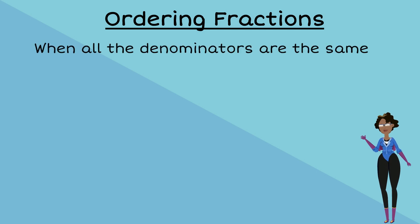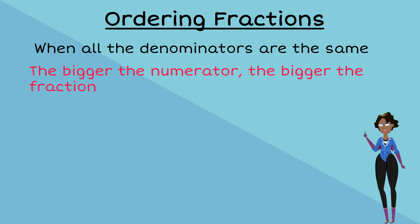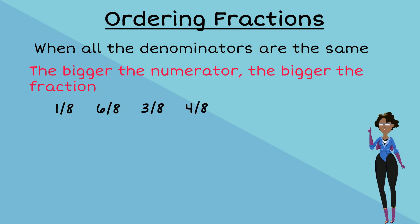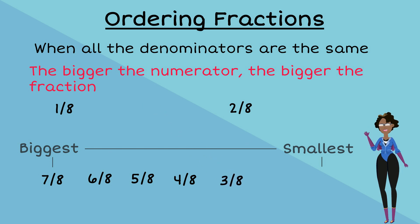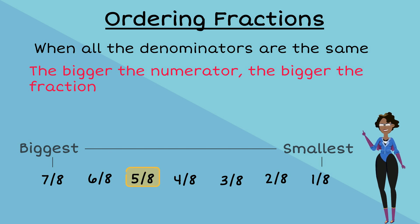Now let's look at our second example where all the denominators are the same. If all the numerators are different, we can use the numerators to arrange them in ascending or descending order. For example, with fractions one eighth, six eighths, three eighths, four eighths, two eighths, five eighths, and seven eighths in descending order, it would look like: seven eighths, six eighths, five eighths, four eighths, three eighths, two eighths, and one eighth. On the pizza menu, John could see that five eighths of a pizza is more than three eighths.